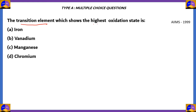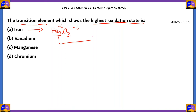Next question. The transition element which shows the highest oxidation state is: A, iron; B, vanadium; C, manganese; D, chromium. We need to find out which of these has the highest oxidation state in any of its compounds. Looking at option A, iron — in Fe2O3, O3 has a total charge of minus six, so Fe2 has a total charge of plus six, meaning one Fe atom has a charge of plus three.